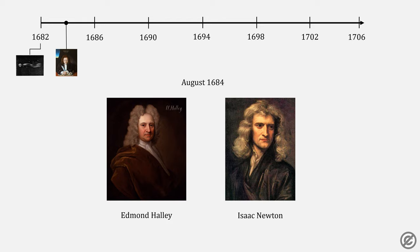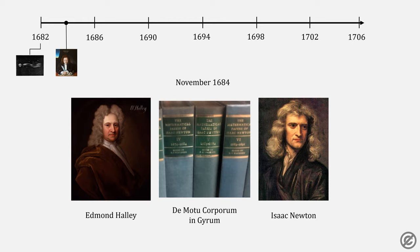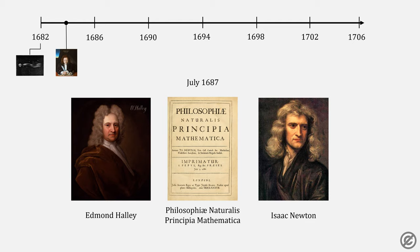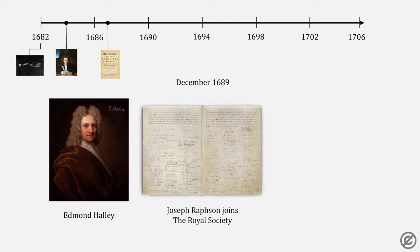In August of that year, Halley then turned to Newton, who also claimed to have solved the inverse square law, but he was actually able to provide evidence. Newton then gave Halley a paper called Of the Motion of Bodies in an Orbit. That paper became the basis for a series of books that we call Principia, which has its own drama and history associated with it.